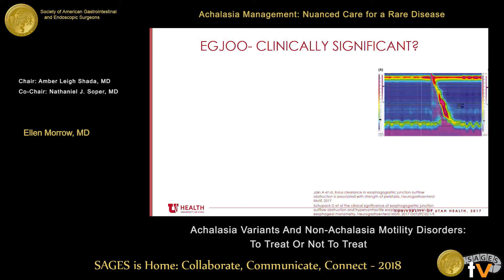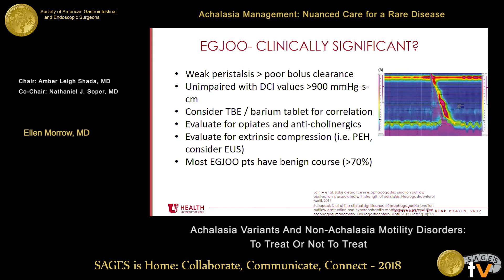To talk a little bit more about EGJ outflow obstruction, I want to stress that this is not always clinically significant. We've lumped it in the Chicago Classification with achalasia, and in some patients it will progress to achalasia. But in the majority of patients this actually has a benign course. If you see someone with a manometry finding of EGJ outflow obstruction, this is a manometric diagnosis where clinical correlation is really important because this is a heterogeneous group of patients, and you don't necessarily know what the clinical course is going to be. Some patients may be symptomatic — if they have associated weak peristalsis they can have poor bolus clearance. However, patients with a relatively normal DCI or peristalsis may have unimpaired swallowing. It's a great idea to consider an esophagram, maybe with a tablet, to look at correlation and figure out if this manometric finding is actually affecting their swallowing.